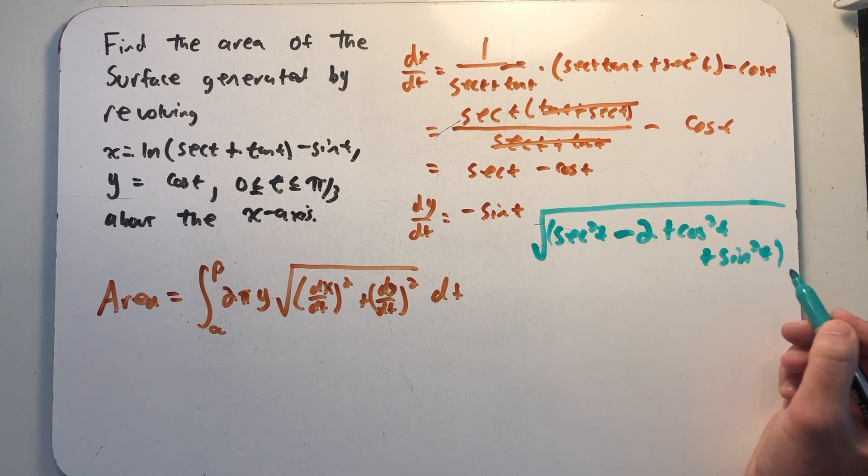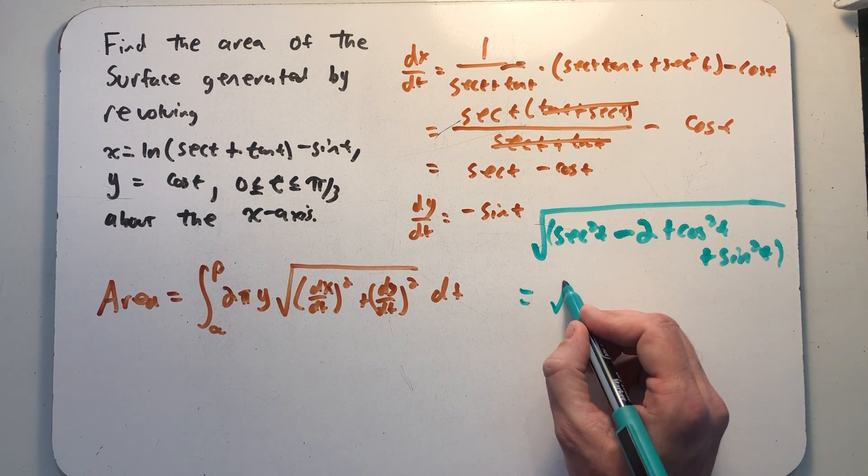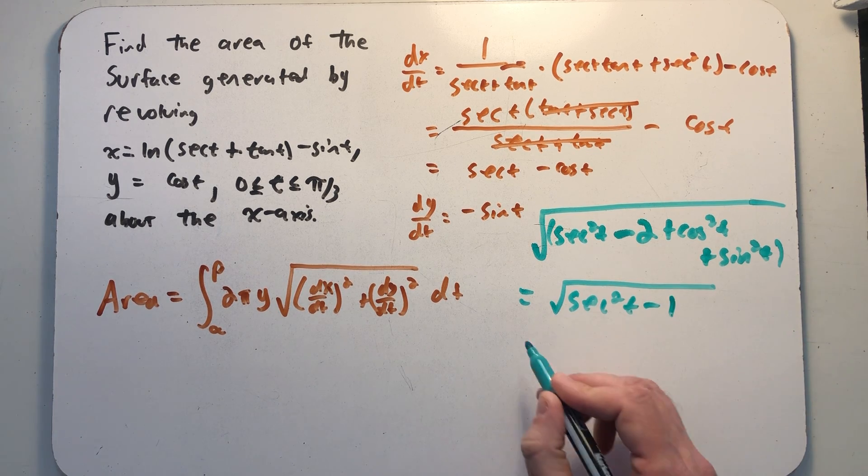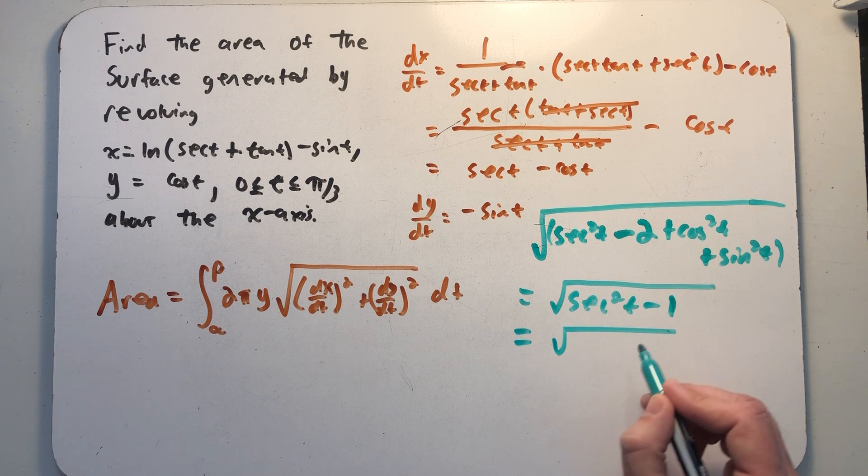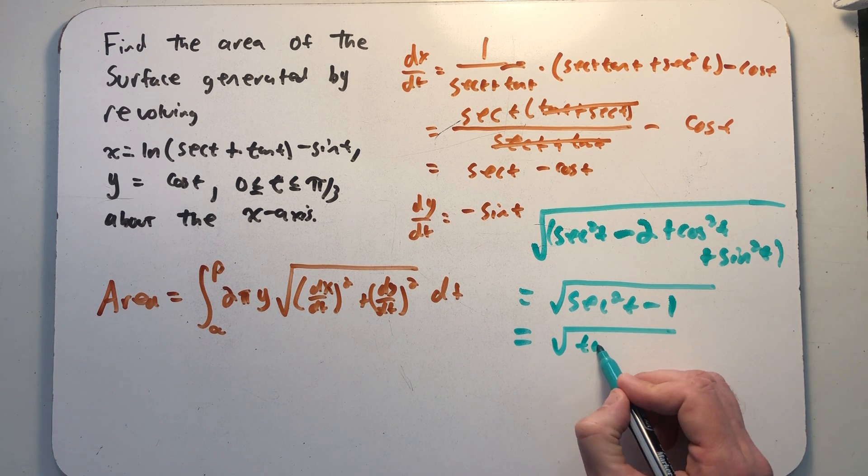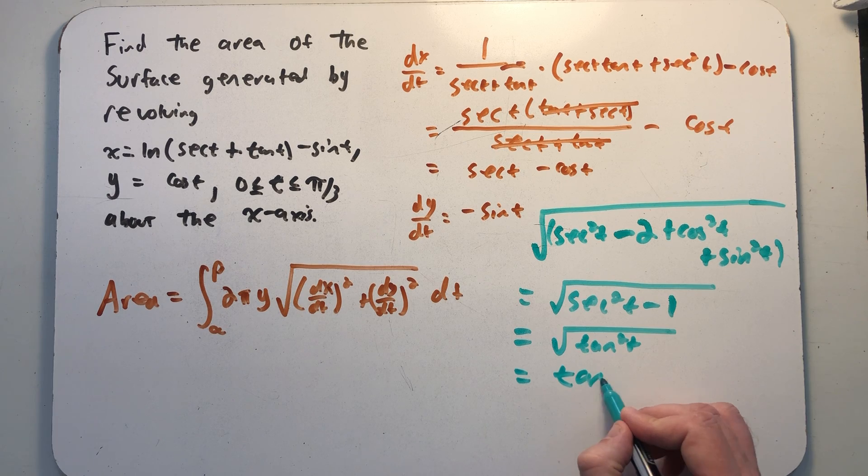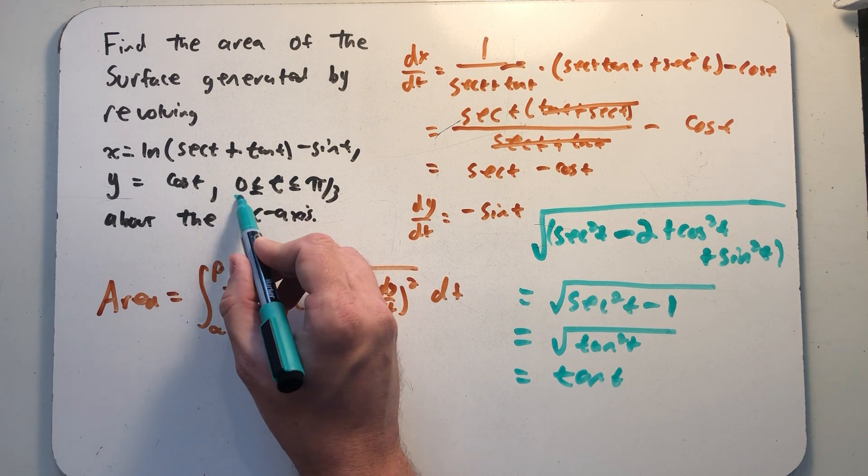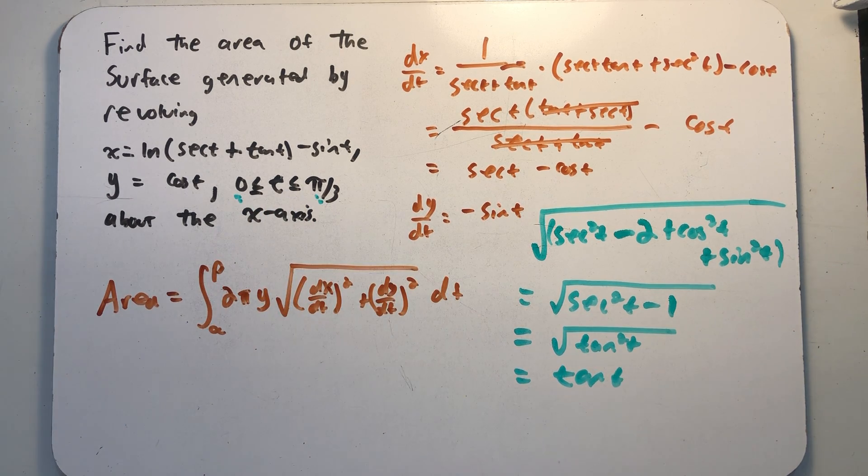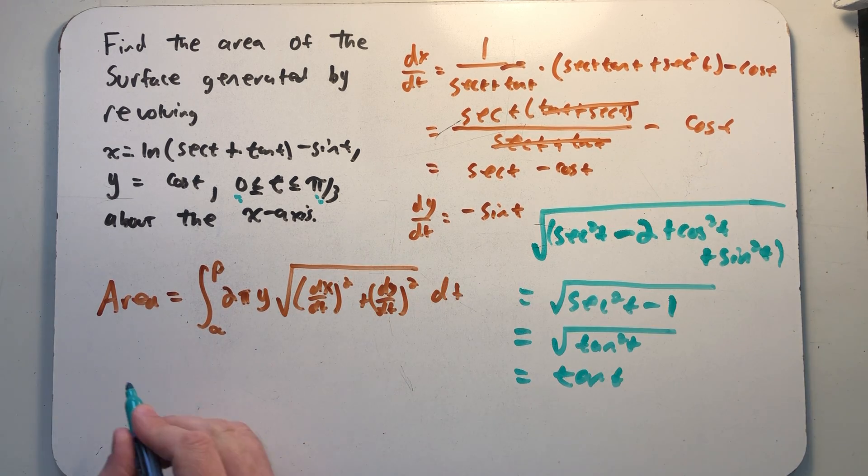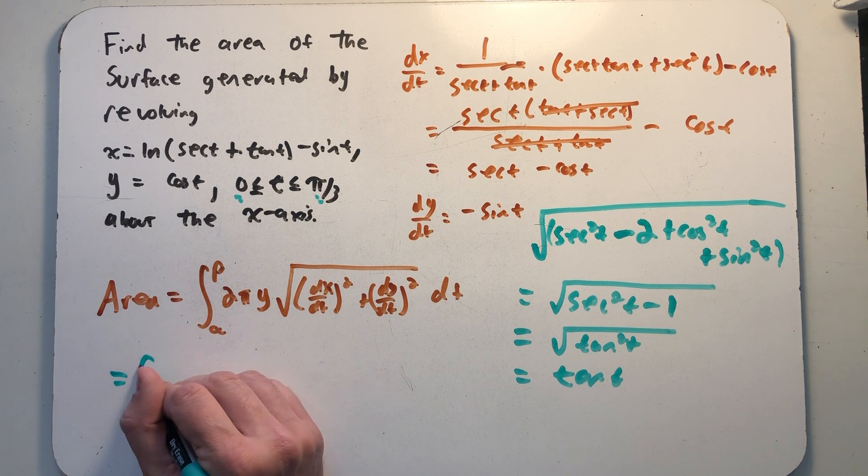Cosine squared plus sine squared, of course, is one, and so looking at this, I have secant squared t minus one under that radical. Well, I know secant squared t minus one is tangent squared t, and so I'm going to get an absolute value of tangent here, but because I'm between zero and pi thirds where tangent is positive, it's really just tangent. So that's the square root expression that appears in my integrand, so we're ready to integrate.